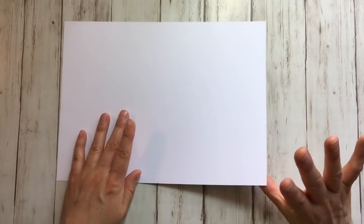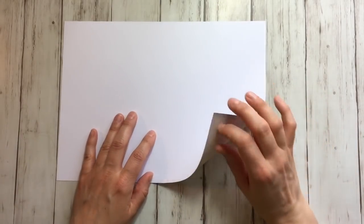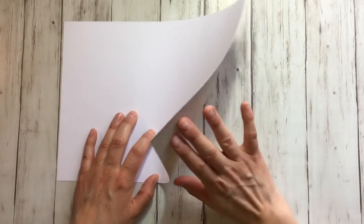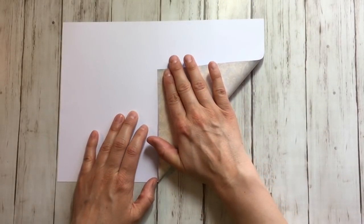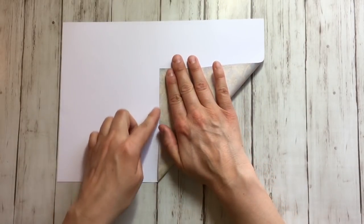Just a little mark and then you're going to take the bottom flap, the bottom right corner, and you're going to fold it straight up.